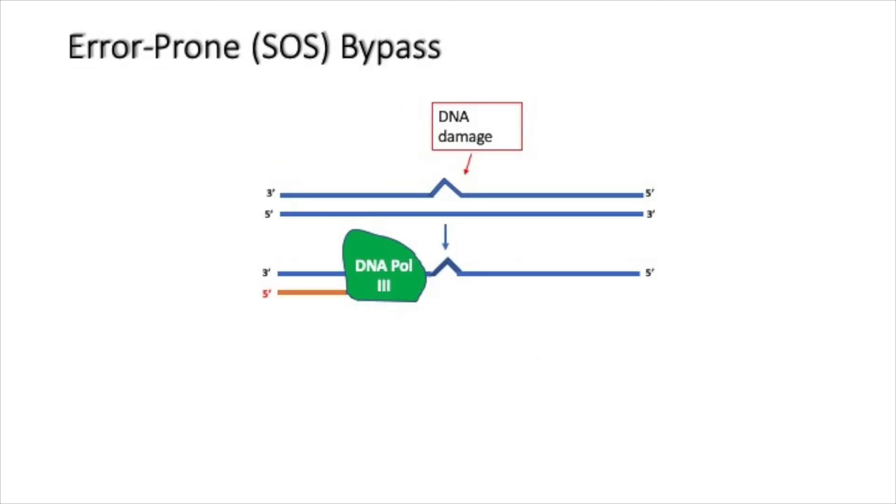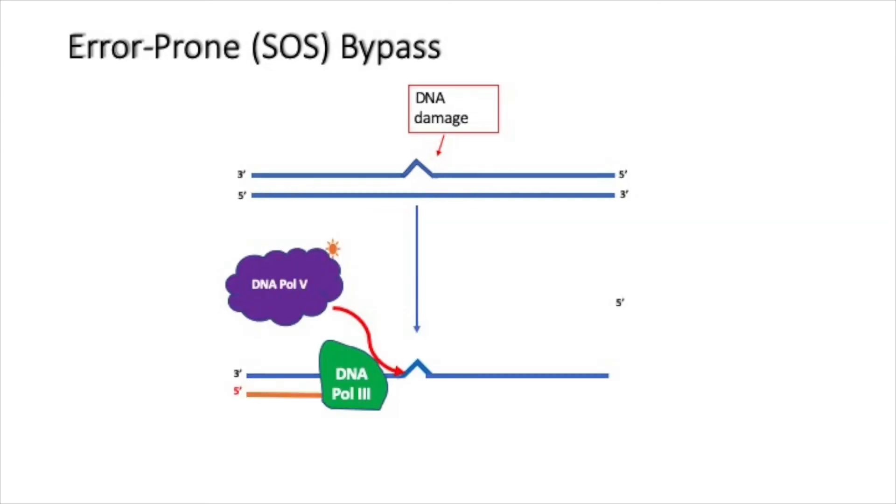Let's return back to our DNA polymerase 3. When DNA polymerase 3 comes across a damaged site, it stalls, being unable to continue past the damage. In its place, DNA polymerase 5 is recruited to the replication fork.